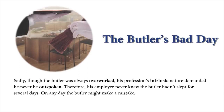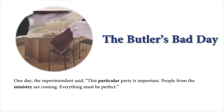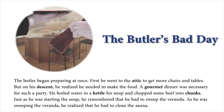On any day, the butler might make a mistake. One day, the superintendent said, 'This particular party is important. People from the ministry are coming. Everything must be perfect.' The butler began preparing at once. First, he went to the attic to get more chairs and tables. But on his descent, he realized he needed to make the food. A gourmet dinner was necessary for such a party. He boiled water in a kettle for soup and chopped some beef into chunks. Just as he was starting the soup, he remembered that he had to sweep the veranda. As he was sweeping the veranda, he realized that he had to clean the sauna.